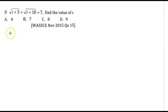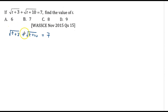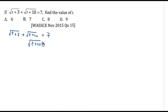Moving on to the next example: square root of (t plus 3) plus square root of (t plus 10) equals 7. We should find the value of t. The strategy here is that even though we can square both sides immediately, it will lead to complicated surds. It is advisable to square both sides only when one of the radical signs is on its own on one side. So let's transpose one of the surds: square root of (t plus 10) equals 7 minus square root of (t plus 3).